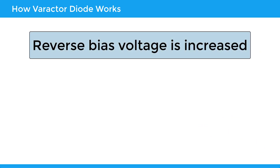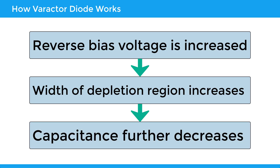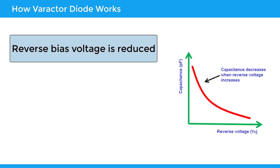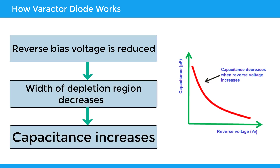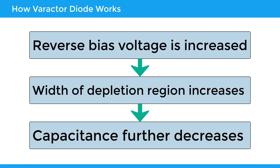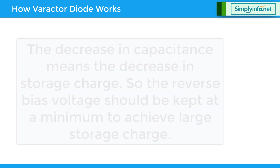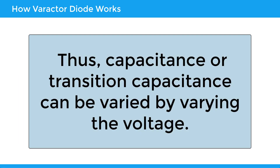If the reverse bias voltage is increased, the width of the depletion region further increases and the capacitance further decreases. On the other hand, if the reverse bias voltage is reduced, the width of the depletion region decreases and the capacitance increases. Thus, an increase in reverse bias voltage increases the width of the depletion region and decreases the capacitance of a varactor diode. The decrease in capacitance means a decrease in stored charge. So, the reverse bias voltage should be kept at a minimum to achieve large storage charge. Thus, capacitance or transition capacitance can be varied by varying the voltage.